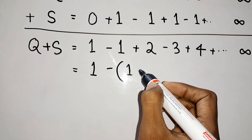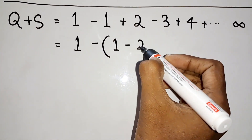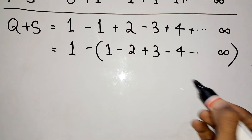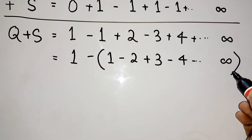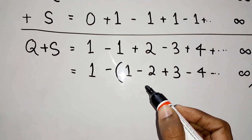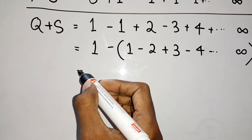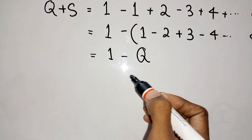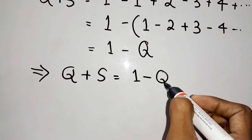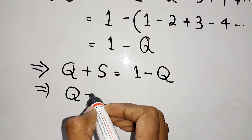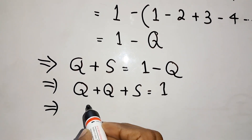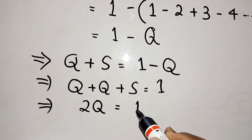We can take the negative sign common outside: negative of (1 minus 2 plus 3 minus 4 and so on to infinity). And what is 1 minus 2 plus 3 minus 4 up to infinity? That is nothing but Q. So by taking the negative outside we get the series as 1 minus Q. So Q plus S equals 1 minus Q. Taking Q to the other side: Q plus Q plus S equals 1, which gives 2Q equals 1 minus S.